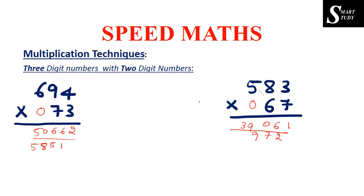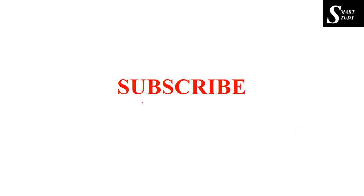So friends, multiplication of a two digit number with a three digit number is quite similar to three digit multiplication. You can do it by simply placing a 0 in front of the two digit number. I hope you understood this concept. Please practice these kinds of questions. Thank you so much for watching — subscribe, like, share the video, and let me know any doubts in the comment section. Have a great day.